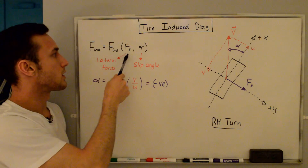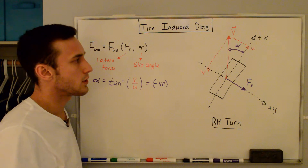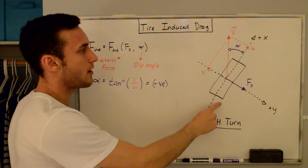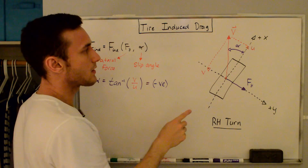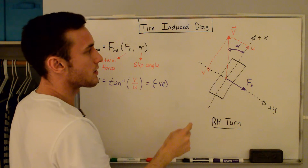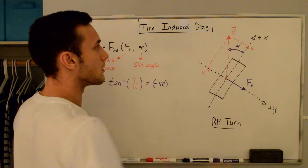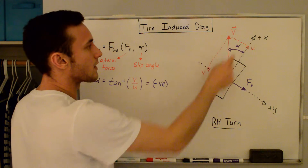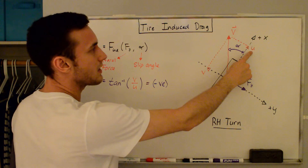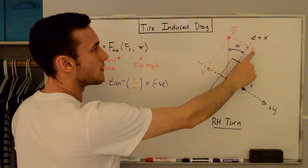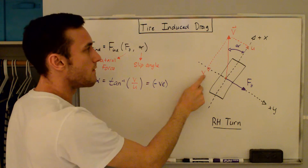Based on our previous discussion, we assume that induced drag will be a function of both lateral force and slip angle. Over here I've drawn an overhead view of a tire in a right-hand turn. The tire is drawn in black and the tire axis system is in black dashed — positive x-axis this way, positive y-axis this way. The velocity vector is drawn in red. We can break up the velocity vector into components: the x-axis component u, and the y-axis component v.